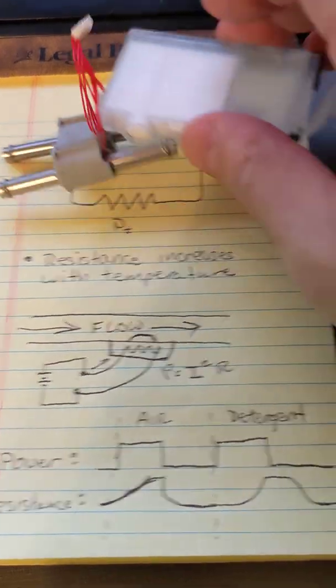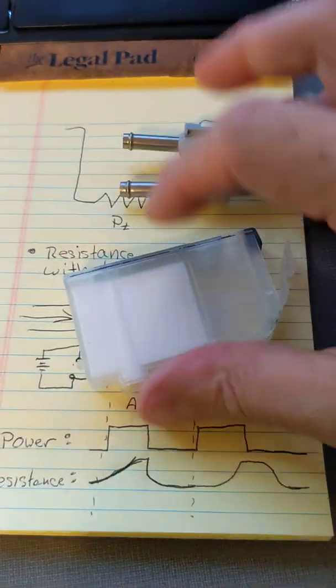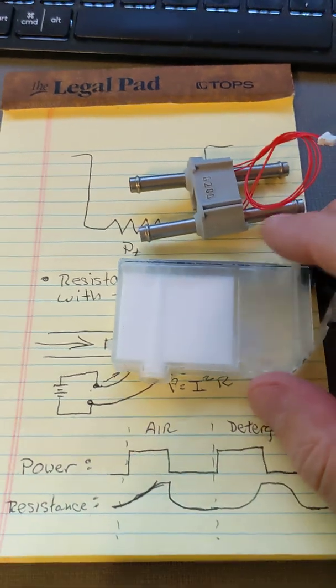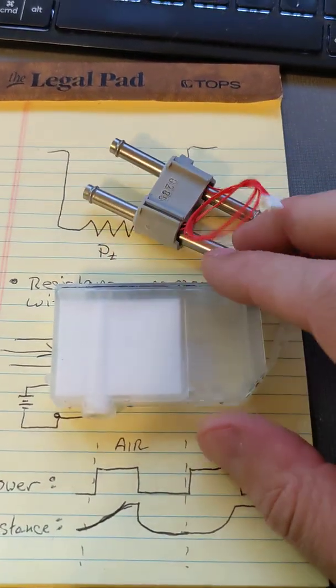Hi, this is a quick explainer video to describe how we can sense liquid is present in some sort of container or tube.